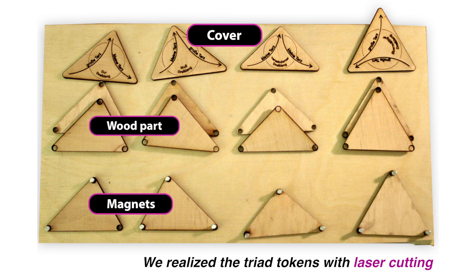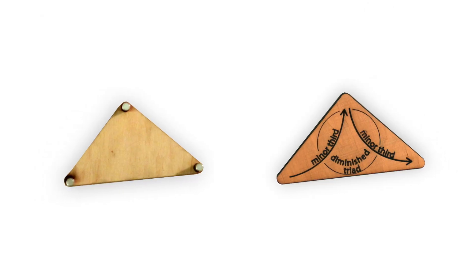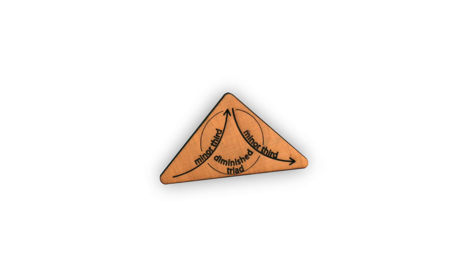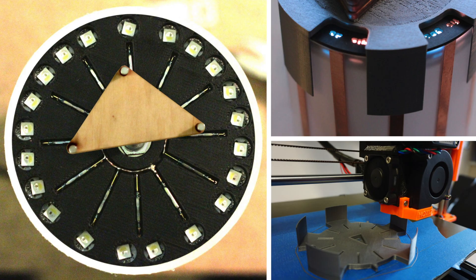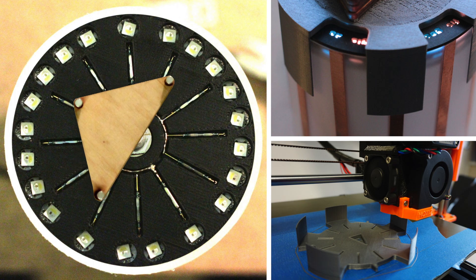The trite tokens are fabricated with a laser cutter and are made of wood and magnets. If a magnetic trite token moves above a reed contact, our system recognizes its position.